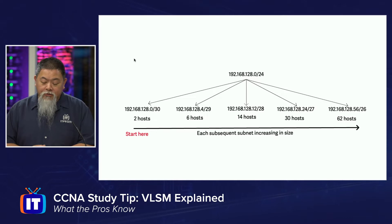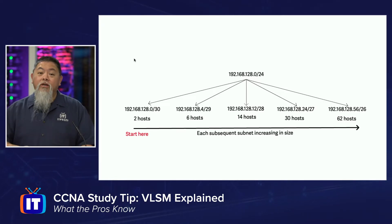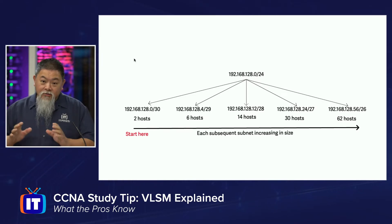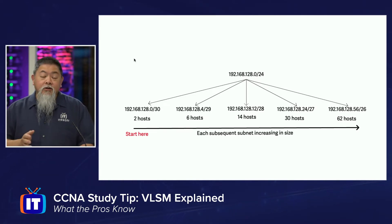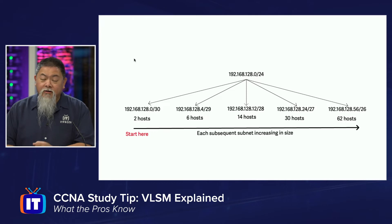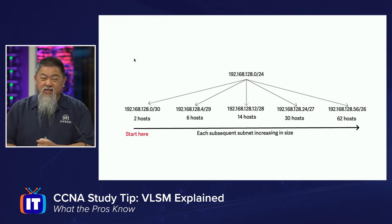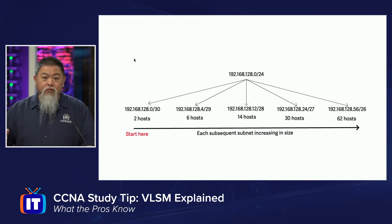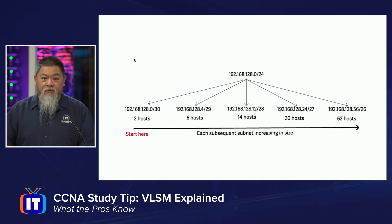So here's an example of this network: 192.168.128.0 with a slash 24. We know that's one class C network. To begin to break that down, we get questions that say you need to create a network with four hosts, or two hosts, or eight hosts, or six hosts — whatever it might be. And then normally at the end, you get one that says 75 hosts or 100 hosts.